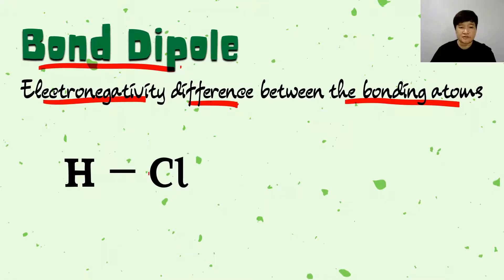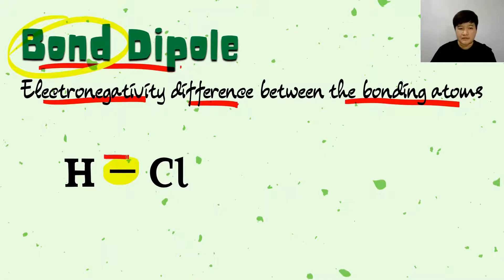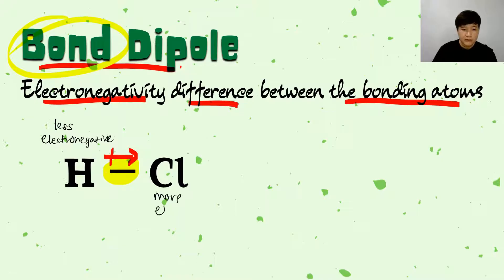Here's a simple example: HCl. What would be the bond dipole of this bond between hydrogen and chlorine? The bond dipole is moving from hydrogen towards chlorine, because hydrogen is less electronegative while chlorine is more electronegative. So the bond dipole is the electronegativity difference between the bonding atoms, moving from hydrogen to chlorine because chlorine is more electronegative.